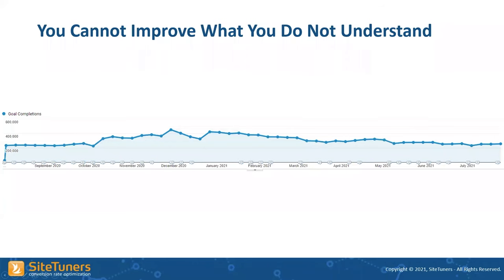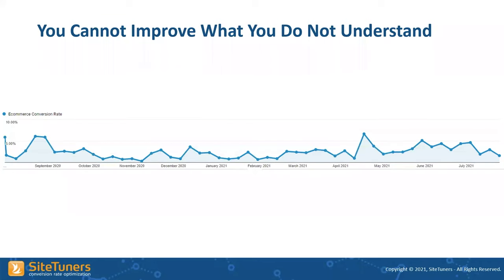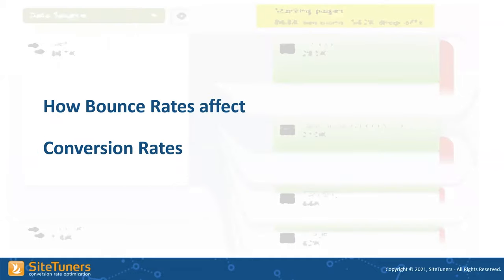Looking at goal completions and e-commerce rates, you can see it's all over the map — peaked at about 7% here but also been down around 1.5%. How are you going to improve that? Part of the answer is to really understand bounce rates, because there is an amazing correlation between bounce rates and conversion rates. Let's talk about how bounce rates affect conversion rates, and then I'll show you live examples of a home page, landing page, and blog page.